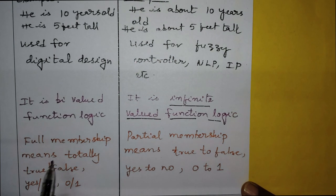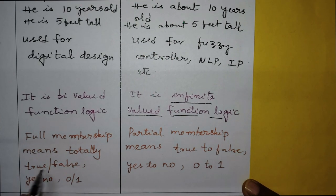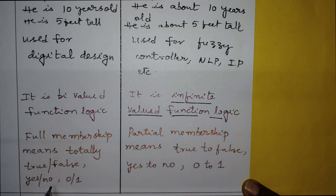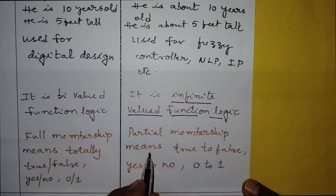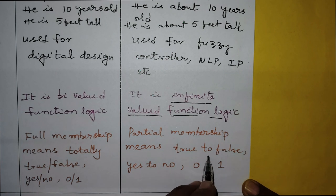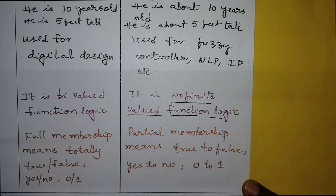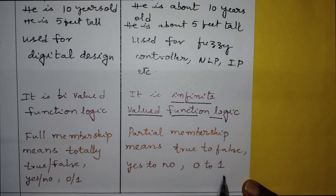Full membership means it is totally true or false, yes or no, 0 or 1 — that is the crisp set. Whereas fuzzy set has partial membership, meaning the values vary between true and false. It is not completely true, not completely false — it is partially true and partially false, ranging from yes to no, 0 to 1.